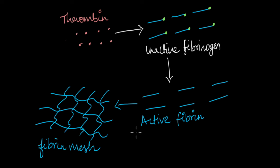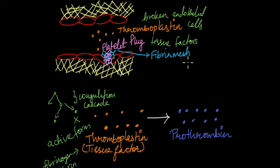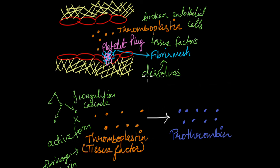Once the active fibrin is formed, the fibrin mesh can be formed. This fibrin mesh goes ahead and helps the platelet plug block the site of injury — it forms a mesh around the platelet plug, fully engulfing it and completely sealing the injury site. This way, no more blood can escape and entry of microorganisms into the body is also prevented. Once the fibrin mesh has done its job and the process of injury repair begins, the fibrin mesh slowly dissolves, which is also regulated by the proteins involved in the coagulation cascade.